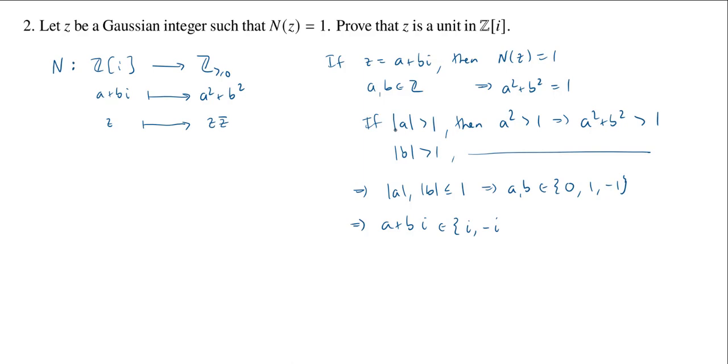And if b is equal to 0, the same thing. Then a would have to be either 1 or minus 1, in which case we just get 1 or minus 1.